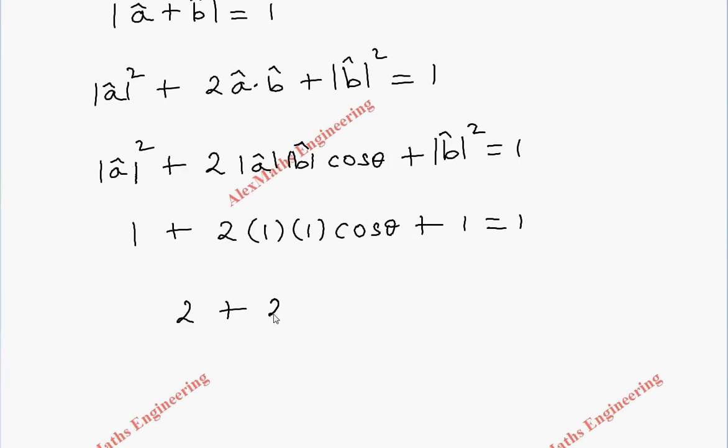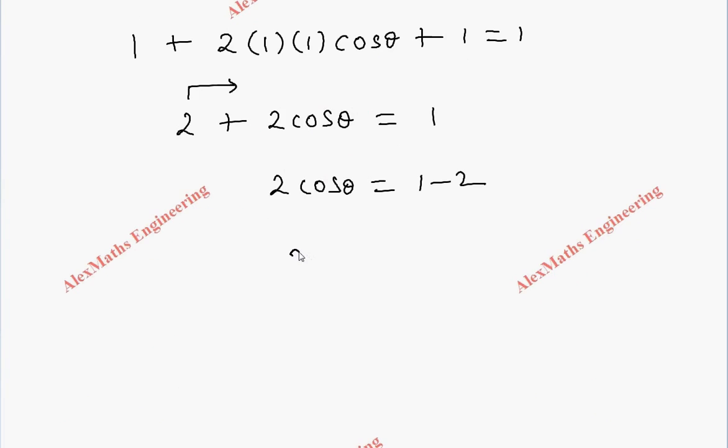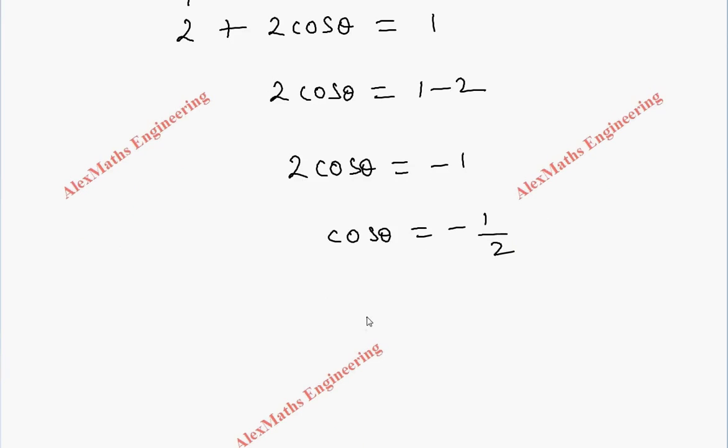So 2 plus 2 cos theta equal to 1. So 2 cos theta equal to 1 minus 2. So 2 cos theta is equal to minus 1. So cos theta is equal to minus 1 by 2. And from this, the value of theta is 120 degree, which is 2 pi by 3.